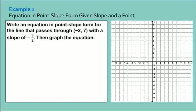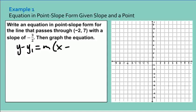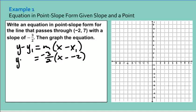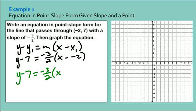For example, write an equation in point-slope form for the line that passes through negative 2, 7 with a slope of negative 3 halves, then graph the equation. Point-slope form means Y minus Y1 equals M times X minus X1. Our slope is negative 3 halves, our X1 is negative 2, and our Y1 is 7. Substituting, we get Y minus 7 equals negative 3 halves times X plus 2.